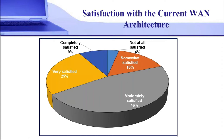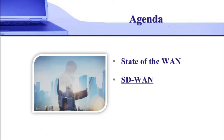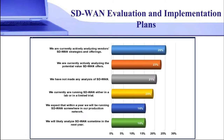I asked these network organizations how satisfied they are with their current architecture — this 15-year-old architecture. Two-thirds are at best moderately satisfied. The bottom line is that new requirements — cloud, mobility, etc. — aren't being well served by the traditional WAN, and that's what's driving interest in new WAN solutions, and in particular, a software-defined WAN.